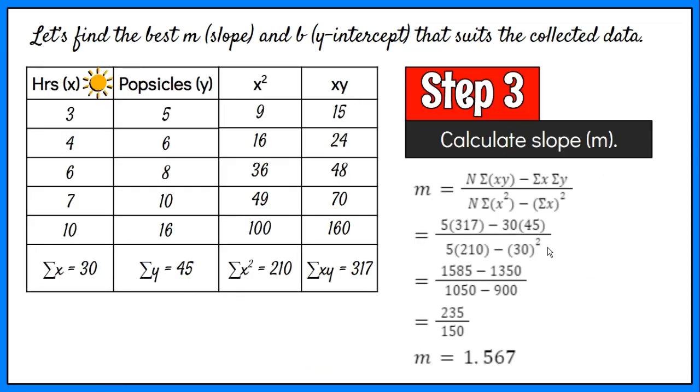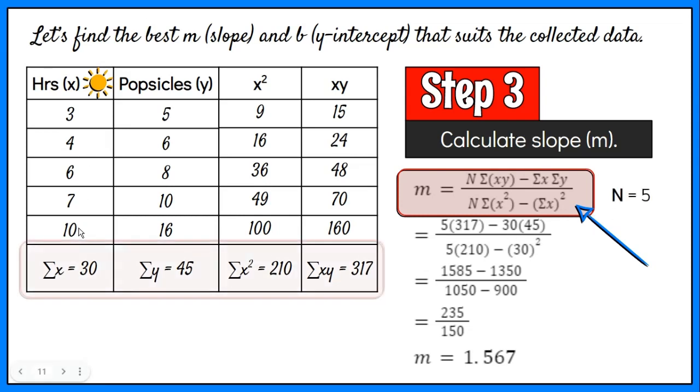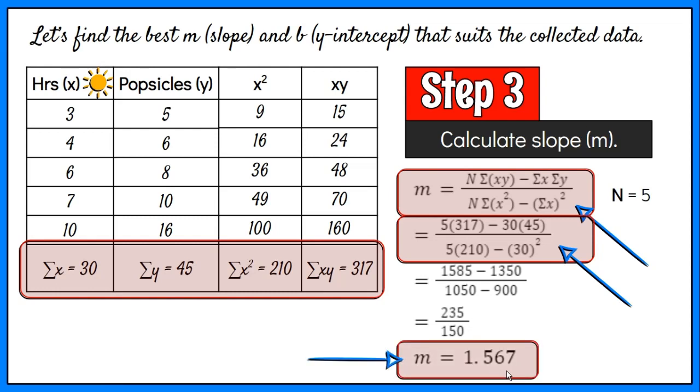Step 3: Calculate slope or m. This is the formula that we will use to determine the slope. The n is the number of data values. For this example, it's 5. We use the computed values in the table. The result is 1.567.